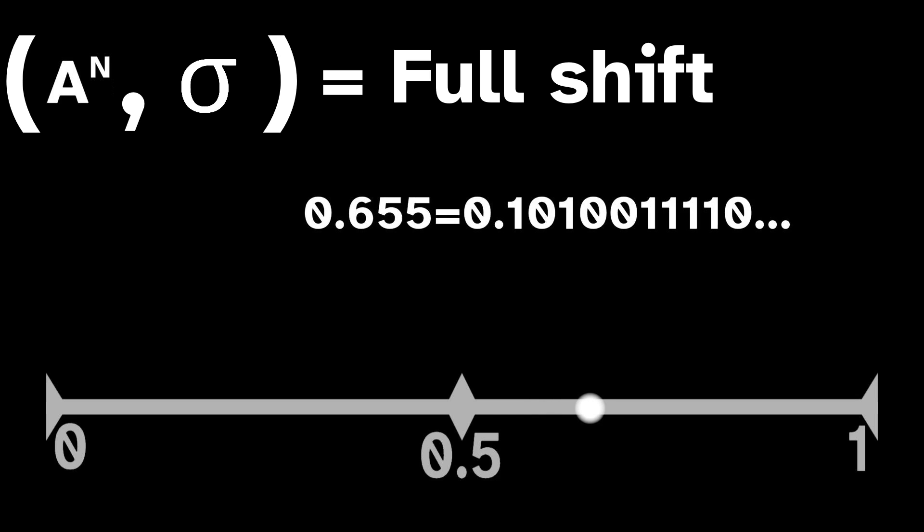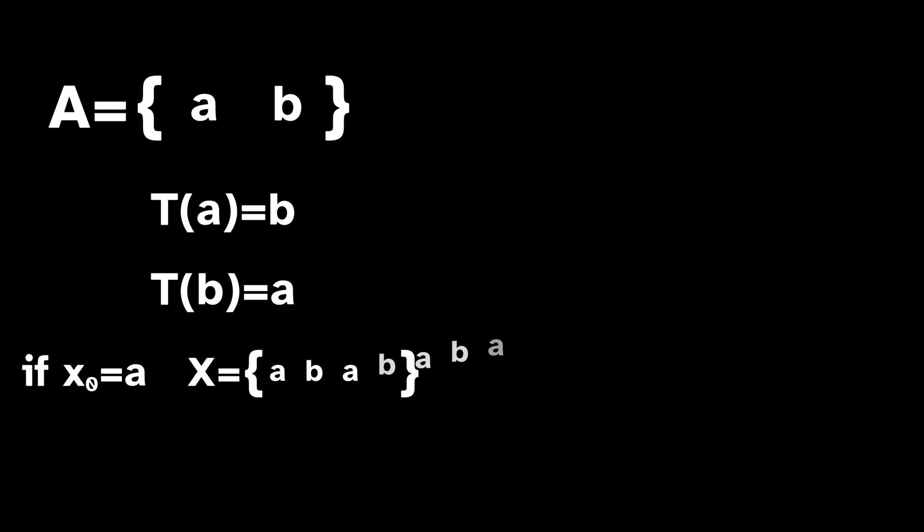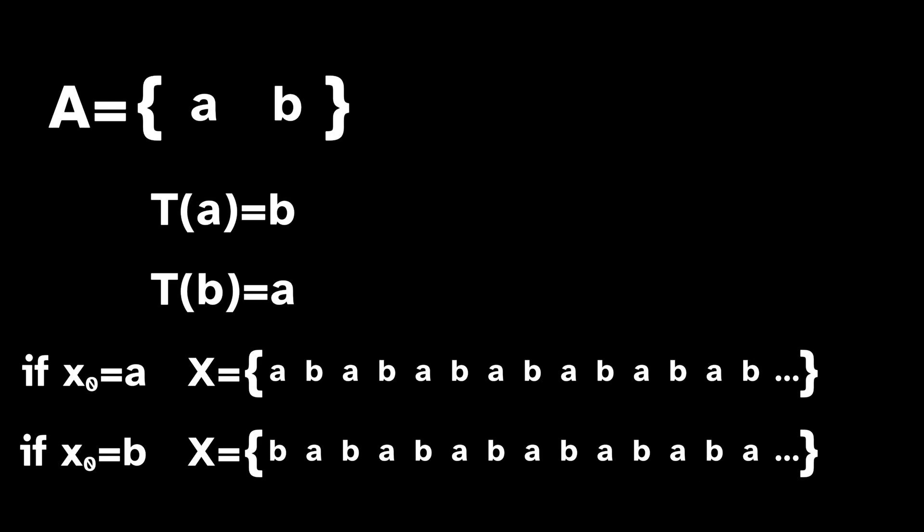But of course, not every dynamical system is the same. Consider a much simpler example where our base space is just two points, a and b, and t simply swaps them back and forth. The trajectory of point a is a, b, a, b, while the trajectory of point b is b, a, b, a. We can still encode these trajectories with sequences of symbols, but only these two sequences are necessary. This dynamical system embeds in the full shift on two symbols, but it isn't all of the full shift on two symbols, making this a subsystem of the full shift.